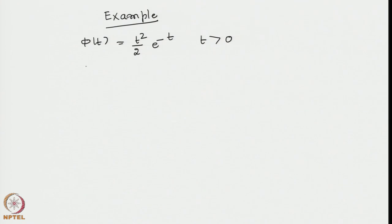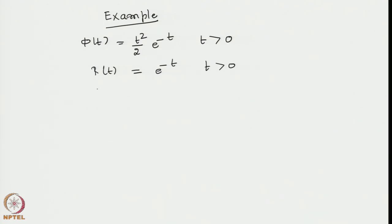This output has been because of two things: one, a certain form of the input function f(t) which is to be determined, but what is already known is the response function r(t) — how the system behaves. That transfer function or response function is known and let us say it is e to the power minus t for t greater than 0.